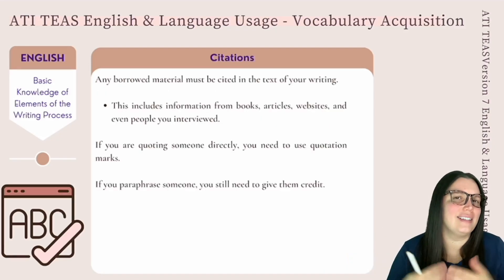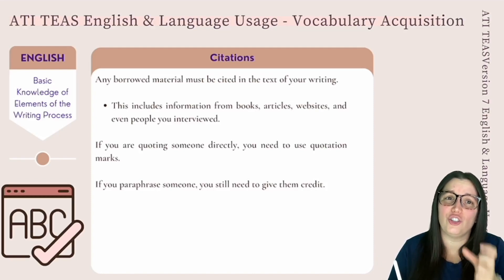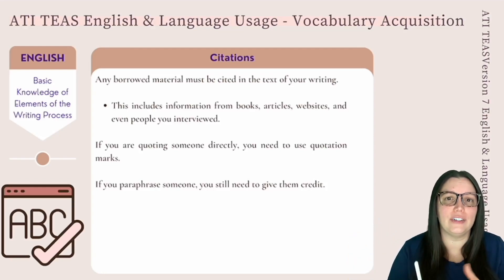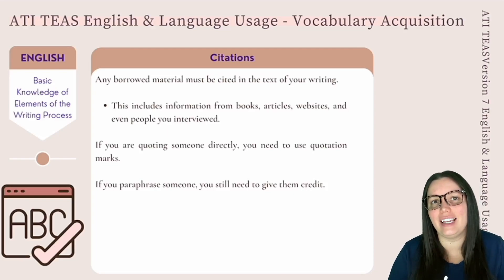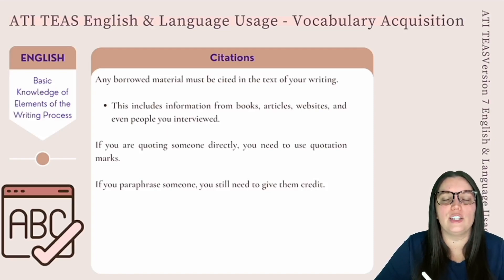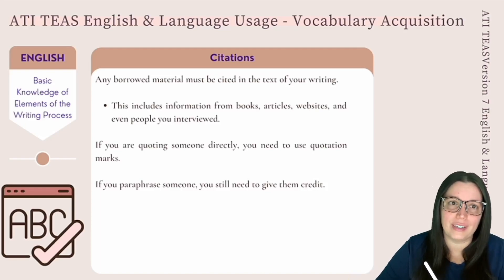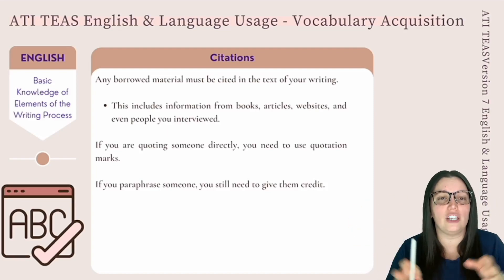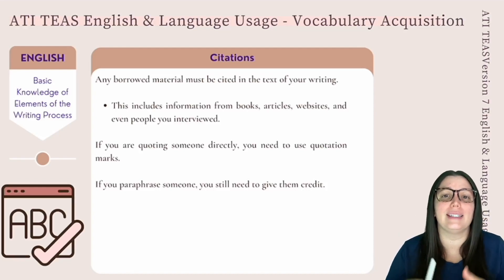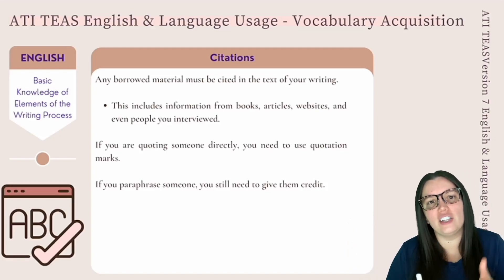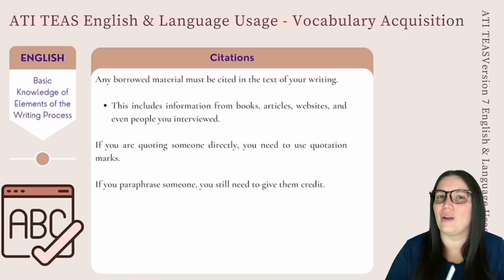While citations are not technically part of the writing process, they are something you truly need to know. Anytime that you have borrowed material in your passage, it has to be cited in your text. This includes anything from books, articles, websites, or even people that you interviewed. If you borrow somebody else's ideas, you have to give them credit. If you're quoting someone directly, use quotation marks. If you're paraphrasing, provide credit as well. Citations usually come at the end of the sentence, just before the period.